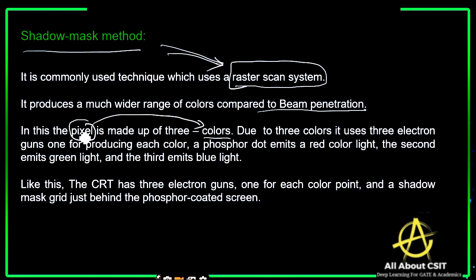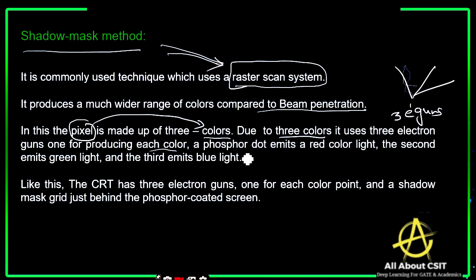Due to these three colors, the shadow mask uses three electron guns, one for each color. Each gun produces one electron beam: one phosphor dot emits red light, the second emits green light, and the third emits blue light. The combination of these emitted lights on the phosphor screen gives a color display. The CRT has three electron guns and a shadow mask grid just behind the phosphor-coated screen.